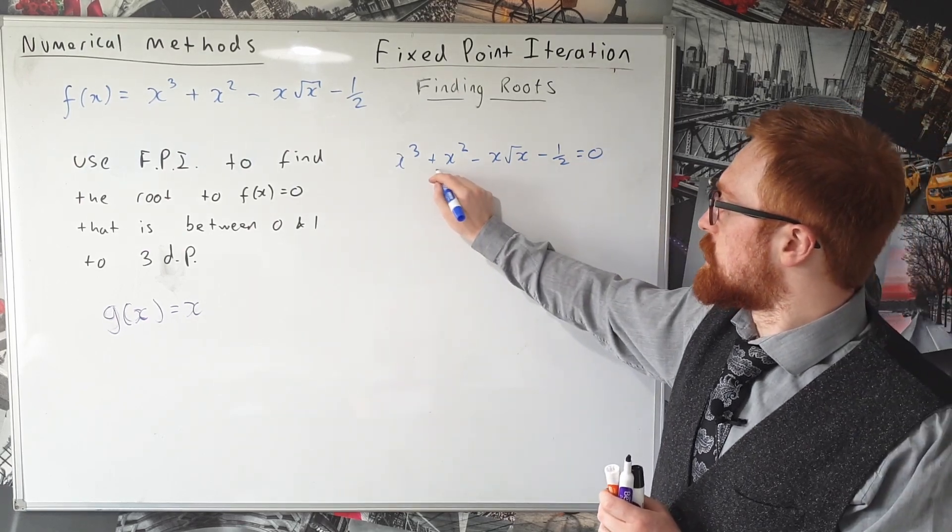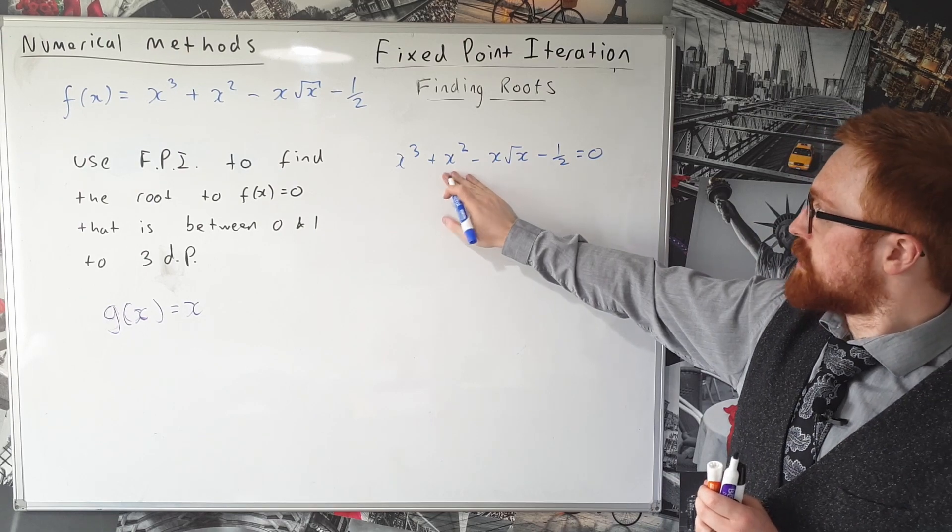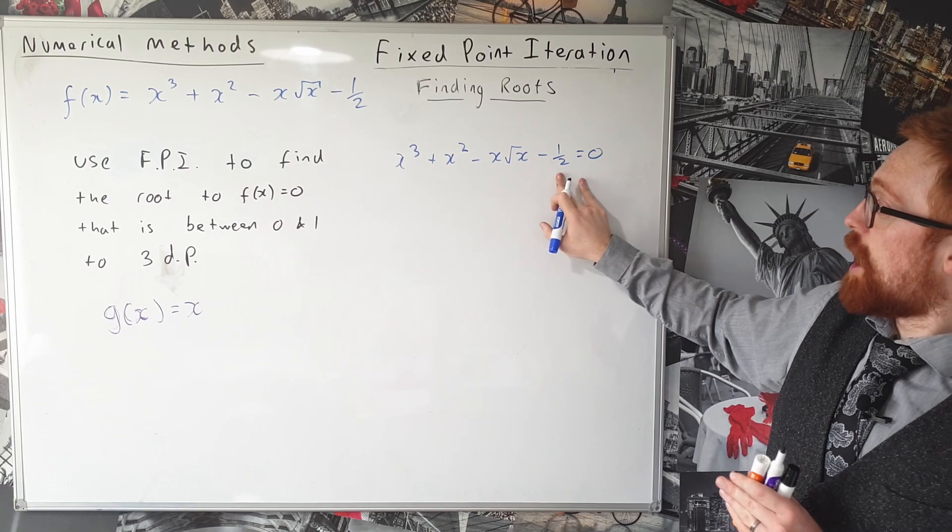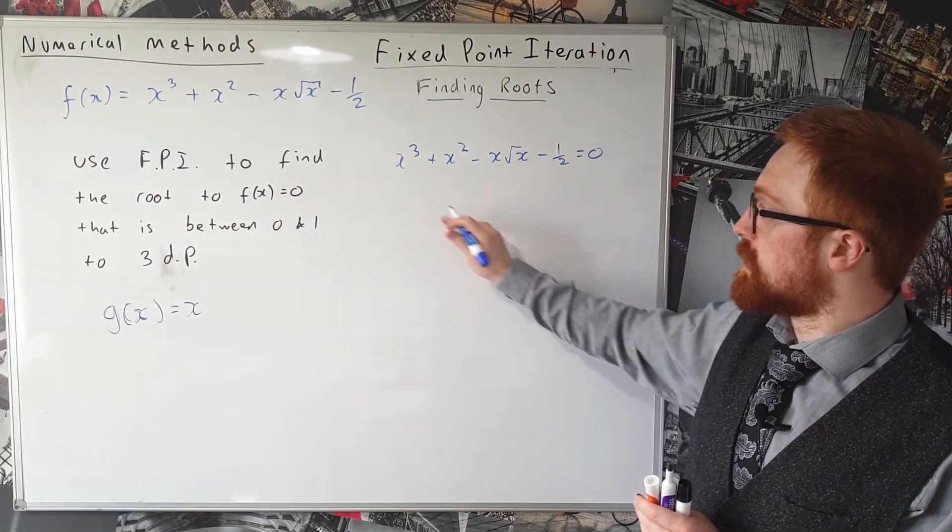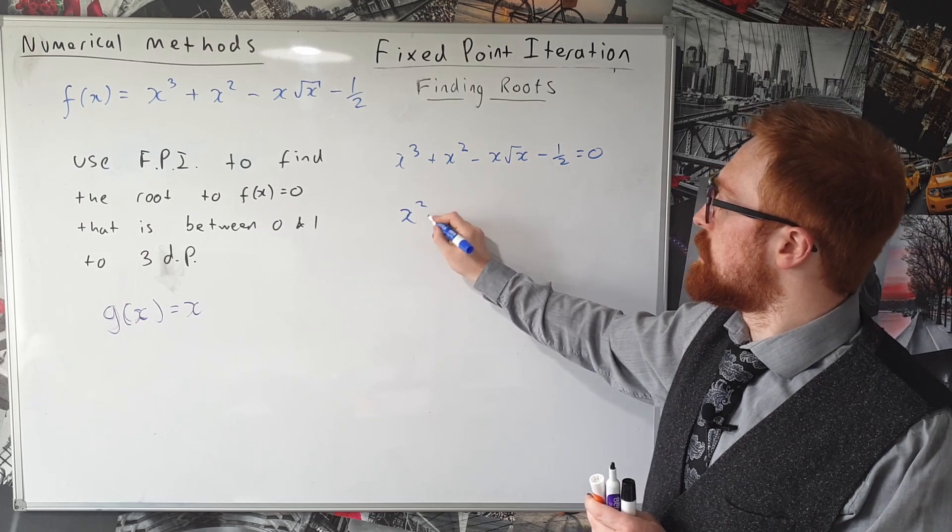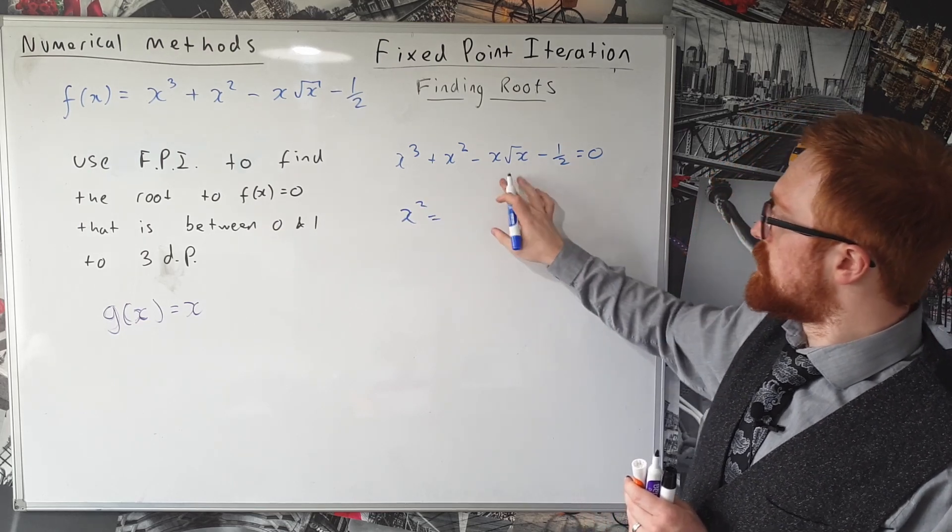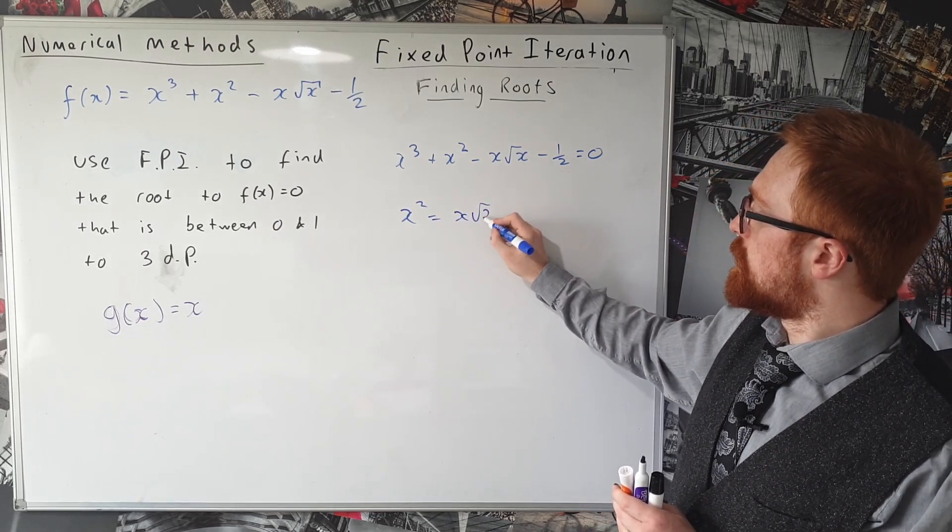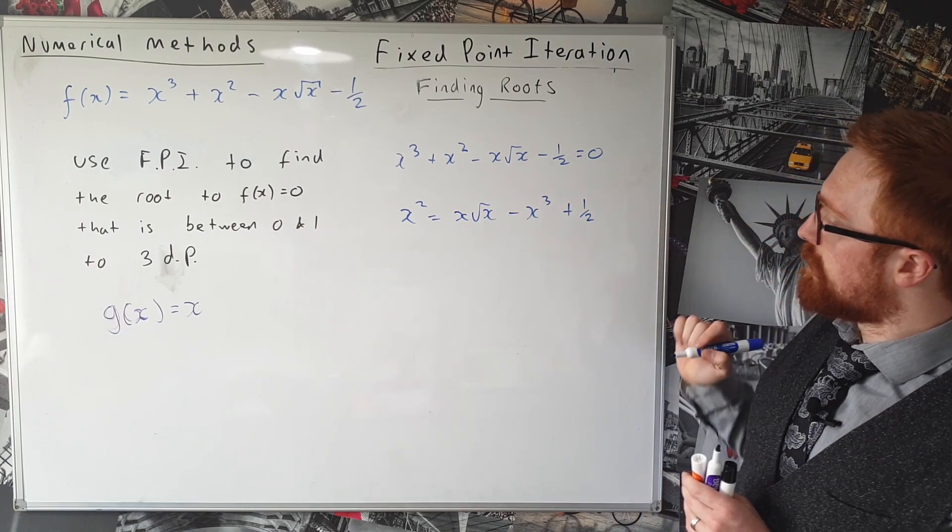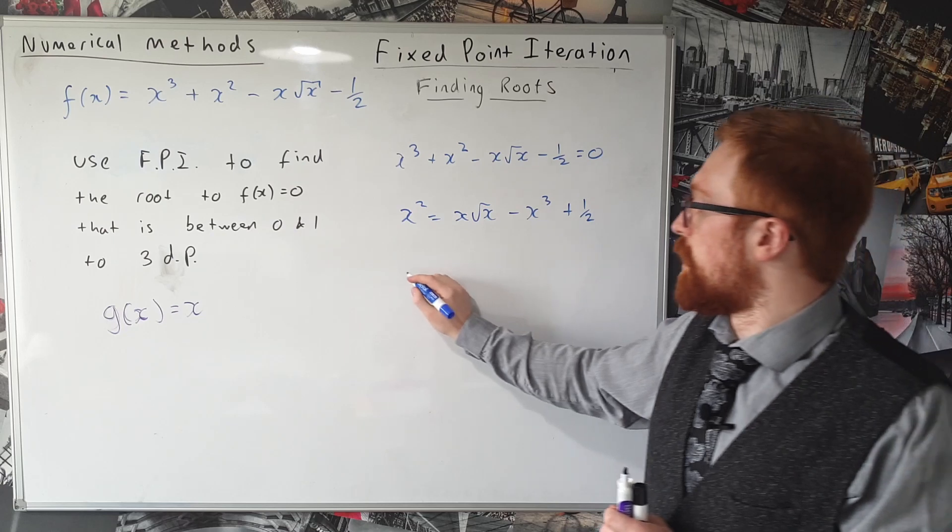So I'm going to aim to make this x² on its own first, which means I need to get rid of this x³, this x√x, and this half. So I'm going to take all those over to the side by subtracting, adding, and adding those terms respectively. So we'll put our x√x first (that's positive), minus the x³ plus the one half equals x², and then we're going to square root.